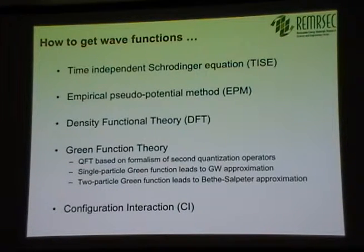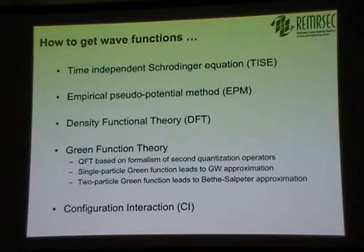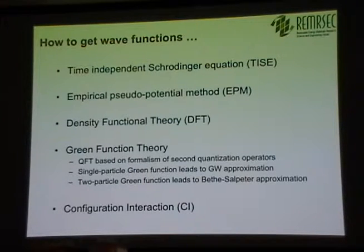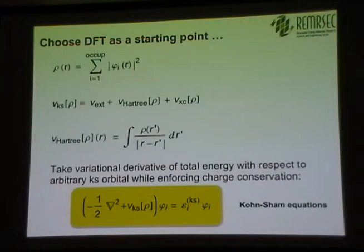We want to design nanostructures with improved PV performance. I want to talk about many-body perturbation theory as a way of doing this. There are other techniques — configuration interaction (CI) is one. Our starting point is going to be the Kohn-Sham equation and these Kohn-Sham orbitals. There's also an empirical pseudopotential method, a non-self-consistent approach using an empirical Hamiltonian fit to experimental data.